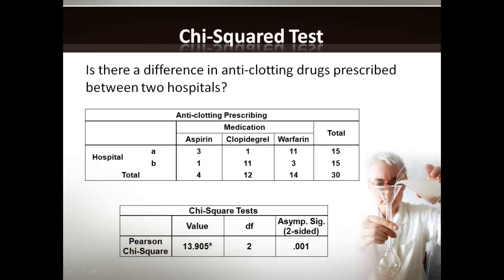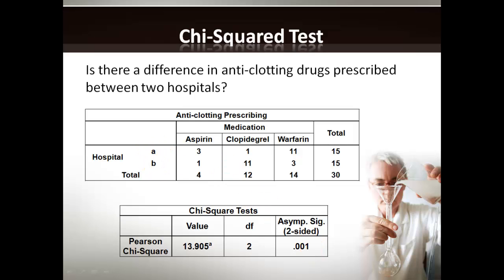Here is an example of a chi-squared test. The question is: is there a difference in anti-clotting drugs prescribed between two hospitals? We have hospital A and hospital B, each with 15 participants surveyed about what anti-clotting drugs they're on. In hospital A: 3 on aspirin, 1 on clopidogrel, and 11 on warfarin. In hospital B: 1 on aspirin, 11 on clopidogrel, and 3 on warfarin. The chi-squared test is looking at whether there's a true difference between A and B, or whether the observed differences are due to random chance. The p-value is 0.001 — meaning a 0.1% chance that the observed difference is due to random chance. Thus, there is evidence against the null hypothesis and evidence for the alternative hypothesis that there is a difference between these two groups.